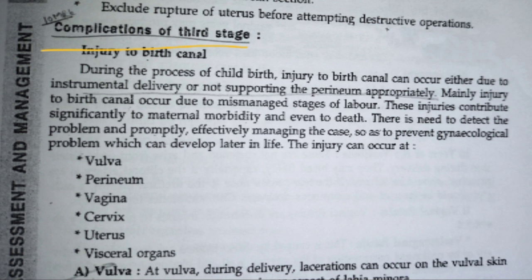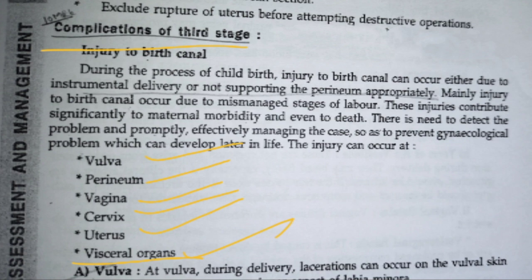At the time of removing the placenta, there might be injury to different levels: vulva, perineum, vagina, cervix, uterus, and visceral organs. Visceral organ injury is quite rare — organs getting damaged because of placenta removal is not commonly seen.